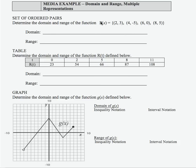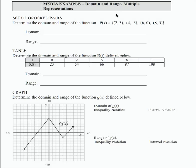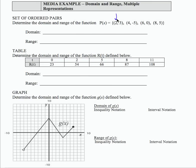If you look at the first one, the function is p of x and p of x is a set of ordered pairs. To determine the domain, I'm just going to look at the input coordinate for each of the ordered pairs in the set that defines the function.